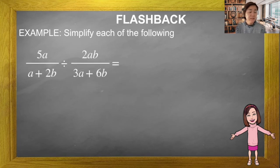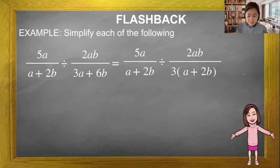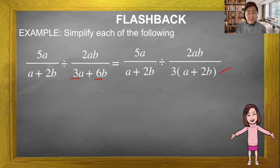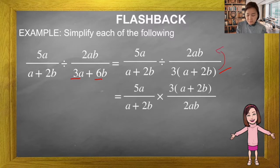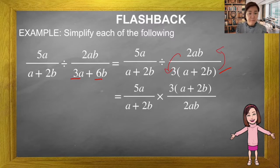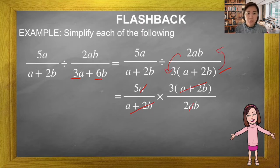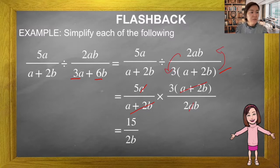Another division question. We change from divide to multiply — reciprocal. First I do the factorization because we have a common factor: 3 and 6. After factorizing, I change from divide into multiply, so this fraction goes up and this one comes down. We simplify: cut matching terms, then a and a. Finally, 5 times 3 is 15 and we have 2b. Answer: 15 over 2b.